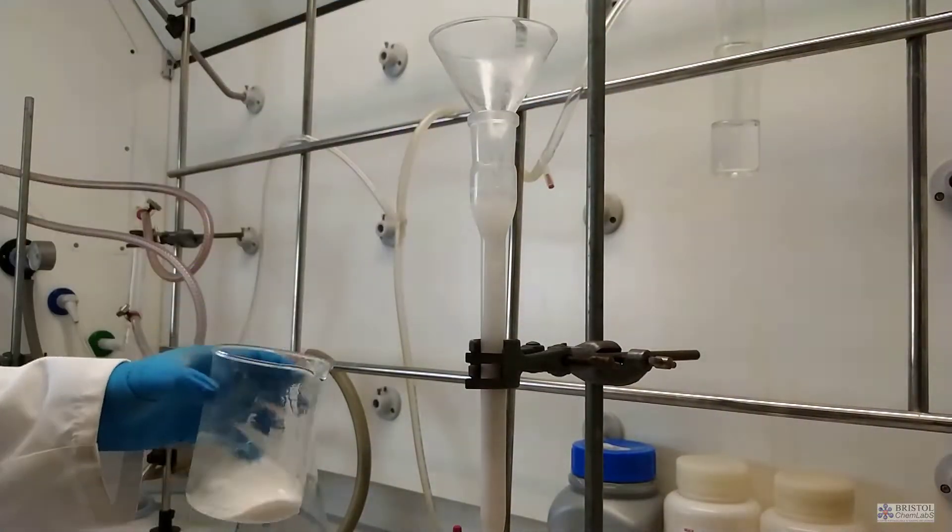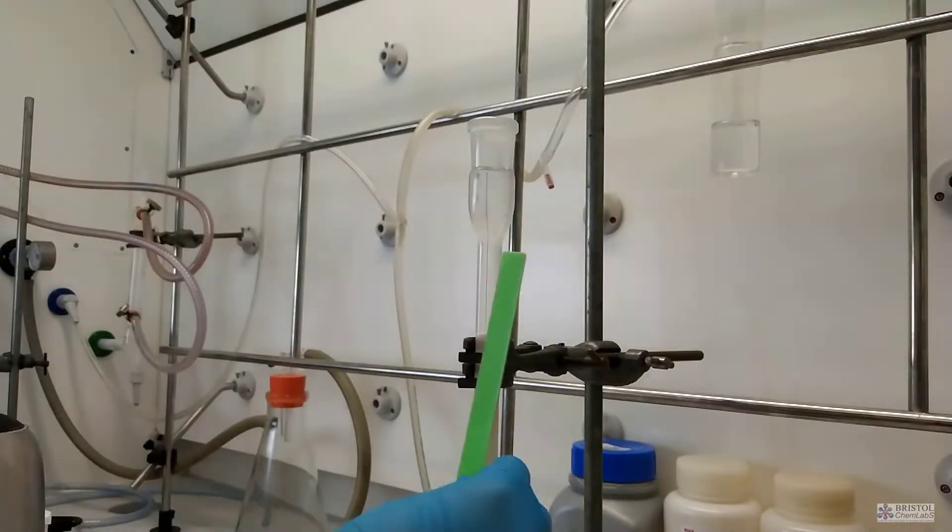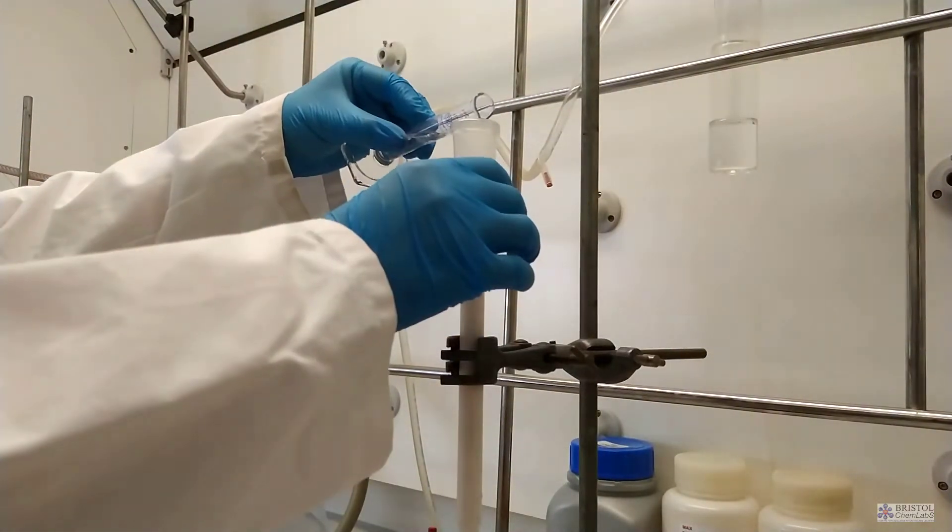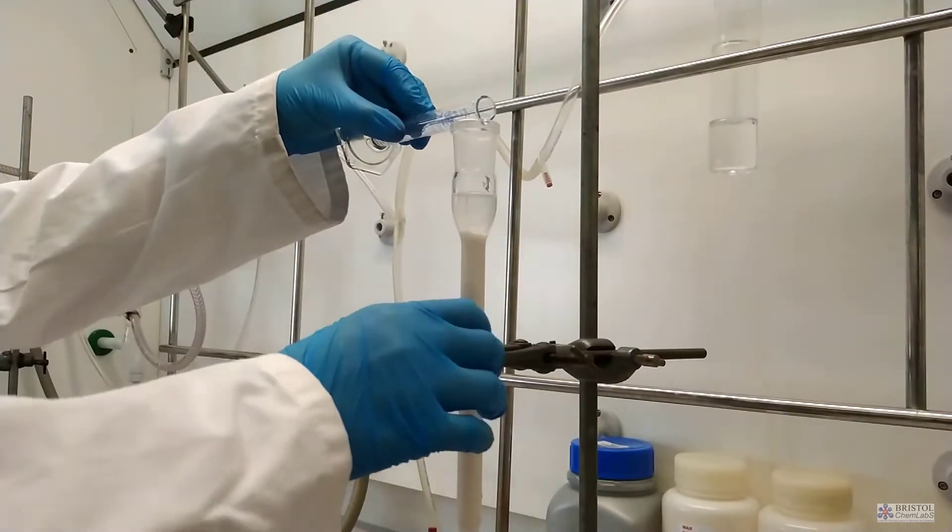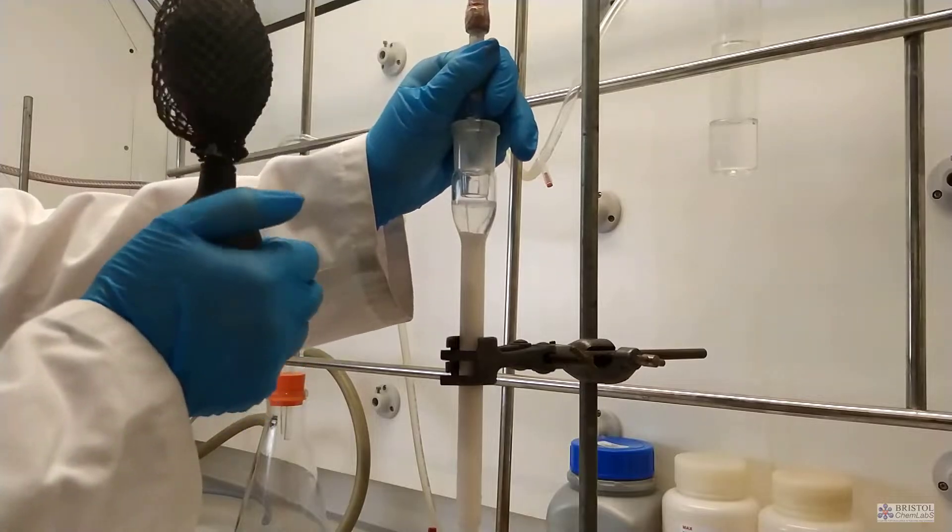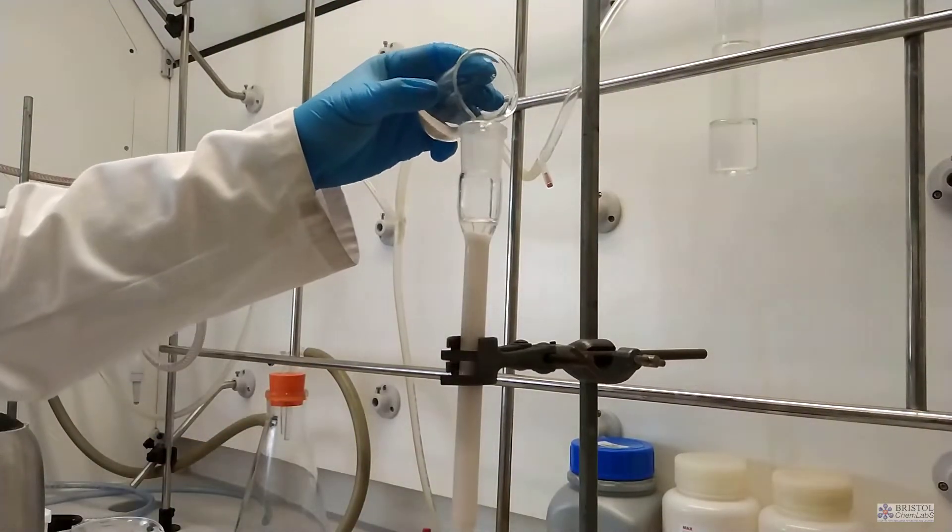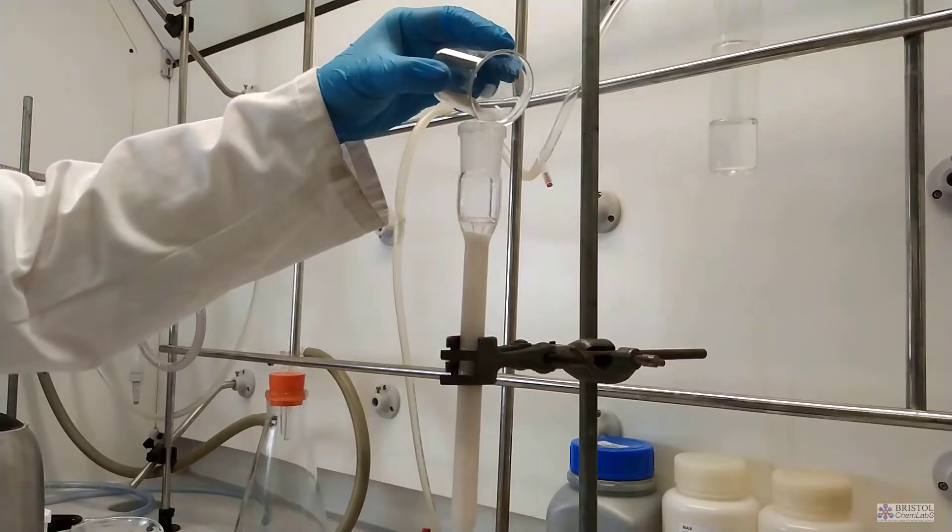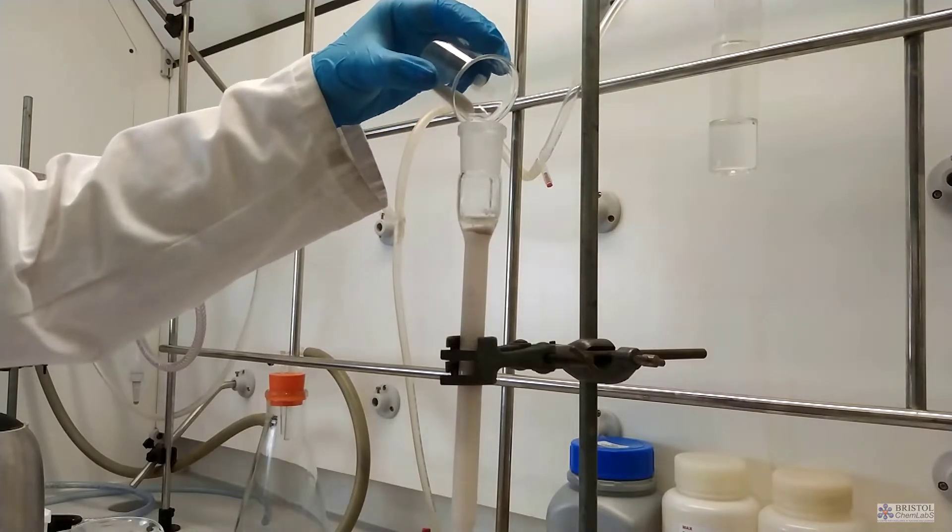The next step is to pass some dilute nitric acid through the column. Once this is done, and ensuring that the column is perfectly flat on top, we either cover the alumina with some sand or with a disc of filter paper cut to the correct diameter. This stops the top of the column being agitated when we pour the eventual solution through.